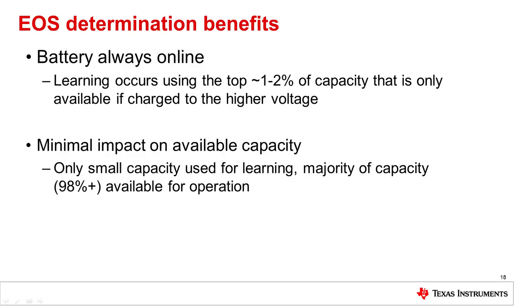Ultimately, the real benefit of this EOS algorithm is that you are able to keep a backup battery system online the entire time. The learning process uses only a very small amount of capacity — one or two percent typically — so you're not sacrificing much of the overall system capacity in order to allow this learning to occur. You still have 98-plus percent of the capacity available just in case a backup event happens, even right in the middle of a learning pulse.